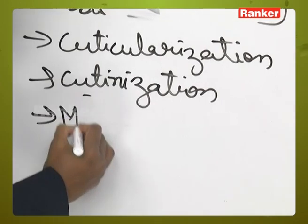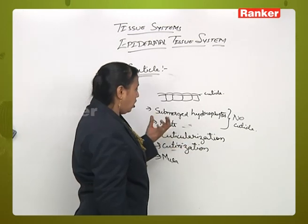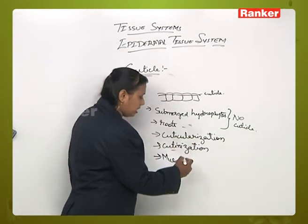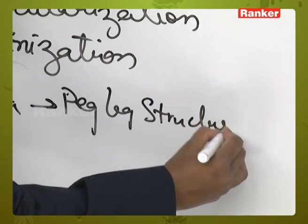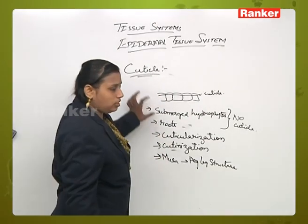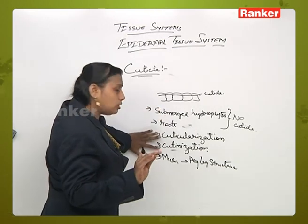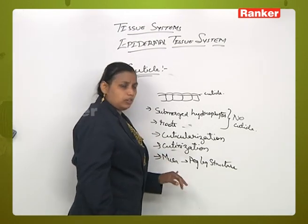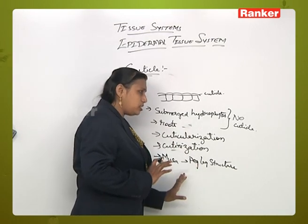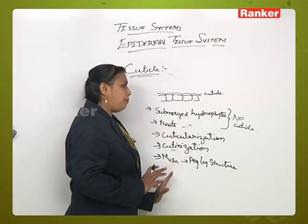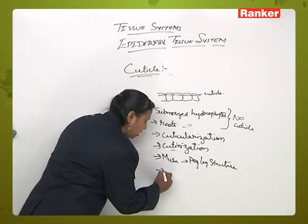An example of cutinization is seen in Musa (banana), where the occurrence of cuticle happens in the form of certain deposits. These deposits develop into peg-like structures. So in banana, the cutin occurs as depositions which ultimately lead to the formation of peg-like structures.